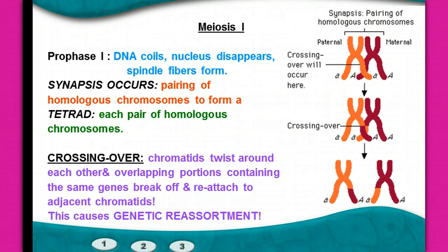In meiosis I, we're going to look specifically at the phases. It still follows prophase, metaphase, anaphase, telophase. In prophase I, the same process occurs: DNA coils up and forms chromosomes, the nucleus disappears, and the spindle fibers form, attaching to those centromeres. While those homologous pairs of chromosomes are pairing up, sometimes the arms of the chromosomes overlap.